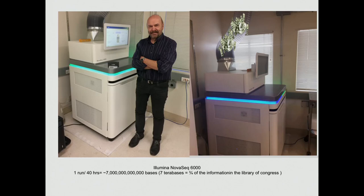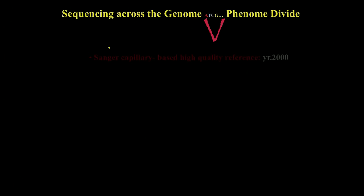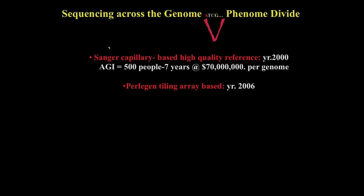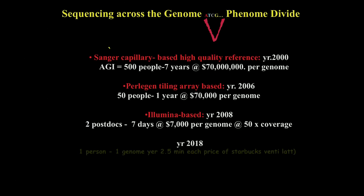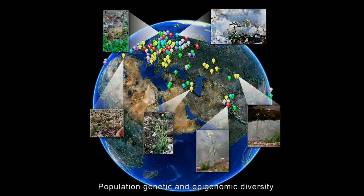What's going out this pipe is dollars. These flow cells are $27,000 each. The machine runs two of them — you can sequence the Library of Congress on one. So you can burn a lot of cash; you need good grant funds and a good reason to be doing this. It took 500 people, seven years, and $70 million to sequence that first genome. Now we've stepped through a whole bunch of technology, and now it's one person, one genome every 2.5 minutes each for the price of a Starbucks Venti Latte. That's an improvement in technology that is unrivaled by any system.